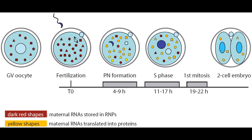Furthermore, translation may be regulated for all mRNA in a cell simultaneously. One example of this is observed before and after fertilization. The unfertilized egg contains a large amount of stored mRNAs, which remain inactive until fertilization, which triggers a translation burst.